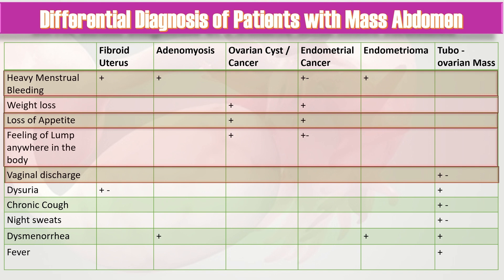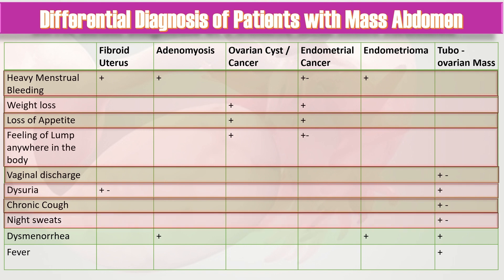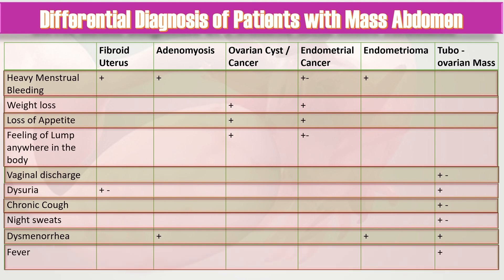If patient gives history of dysuria, think about fibroid uterus or tubo-ovarian mass. If that tubo-ovarian mass is tuberculous in nature, patient may give history of chronic cough or night sweats. Dysmenorrhea may be present in adenomyosis, endometrioma, and tubo-ovarian mass.